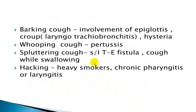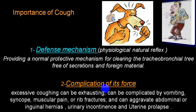Barking cough is frequently due to involvement of the epiglottis or larynx; classical example is croup, also described as laryngotracheobronchitis, and seen in hysterical individuals. Whooping cough has a typical sound that can be associated with inspiratory stridor; classical example is pertussis. Spluttering cough is characteristic of tracheoesophageal fistula or cough while swallowing. Hacking cough is very common in heavy smokers, chronic pharyngitis, or chronic laryngitis.